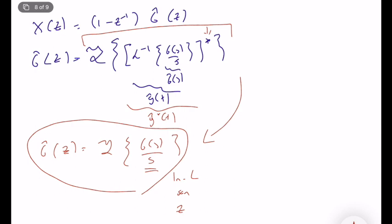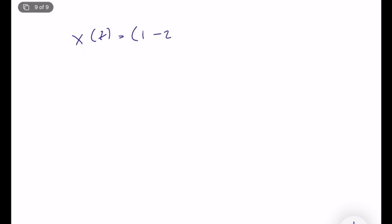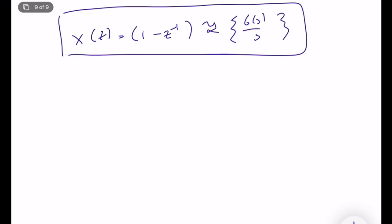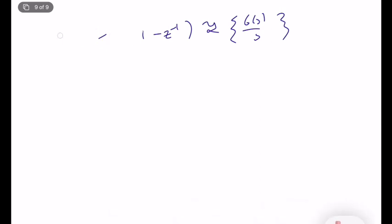So we can simplify the whole process: X(Z) = (1 - Z^(-1)) * Z{G(S)/S}. That's it. We found the result, and now we will solve an example to refresh our knowledge.